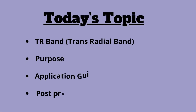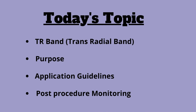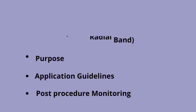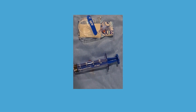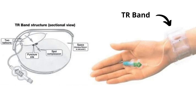In today's video we will talk about what is TR band, or trans-radial band, its purpose, application guidelines, and post-procedure monitoring. The TR band is a transparent band and pressure balloon that enables reportedly unobstructed visualization and monitoring of radial artery compression. The purpose of a TR band is to assist hemostasis of the radial artery after a trans-radial procedure.